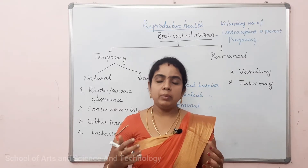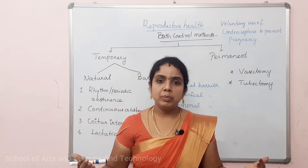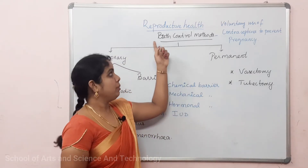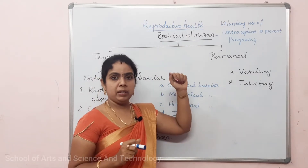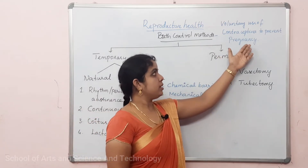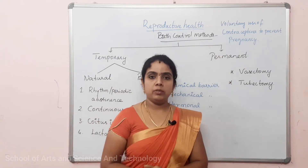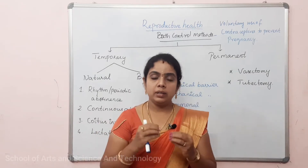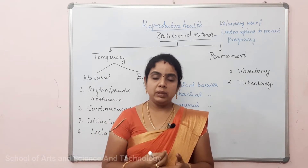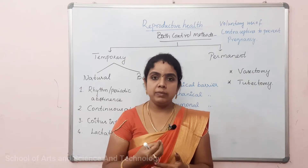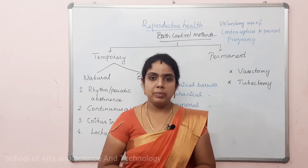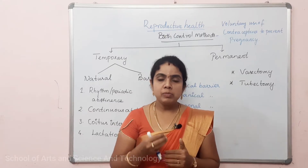So what is the birth control method? The definition of birth control is the voluntary use of contraceptives to prevent pregnancy. That is why pregnancy is avoided. Couples use voluntary measures, methods, or devices — that process is called birth control. So what are the types of birth control methods?